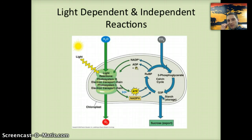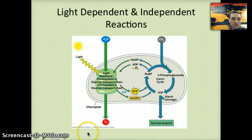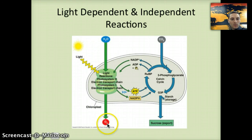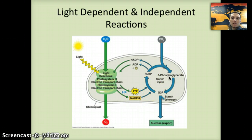In this particular video, we'll look at the light-dependent reactions, meaning that light is necessary in order for these reactions to occur. In this diagram, that's this portion of the overall process of photosynthesis. In this portion, light and water will be used to produce a waste product of oxygen (O2), ATP, and NADPH, which will then be used in the light-independent reactions that we'll see in the next video.